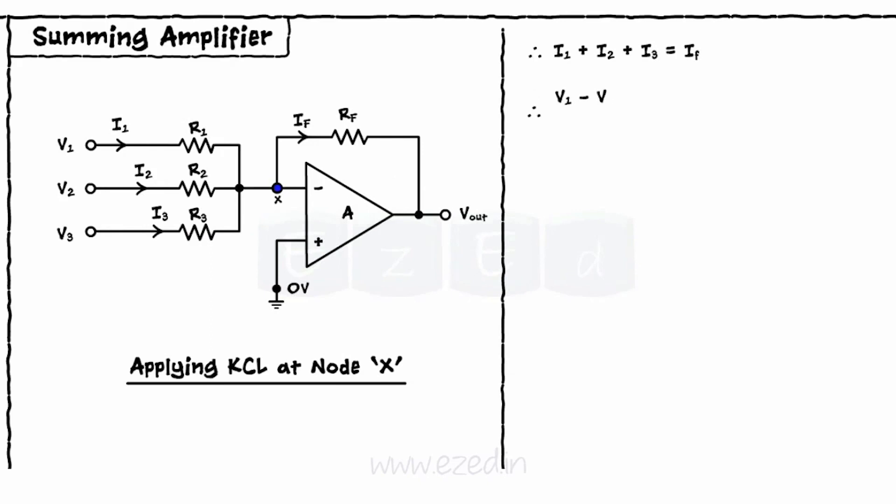V1 minus Vx upon R1 plus V2 minus Vx upon R2 plus V3 minus Vx upon R3 equals Vx minus Vout upon Rf.